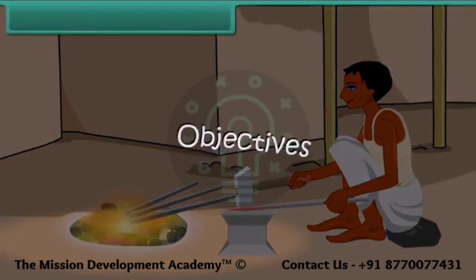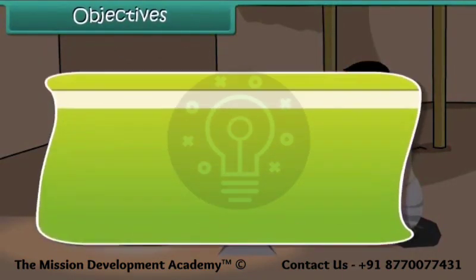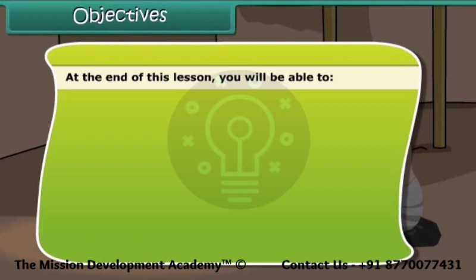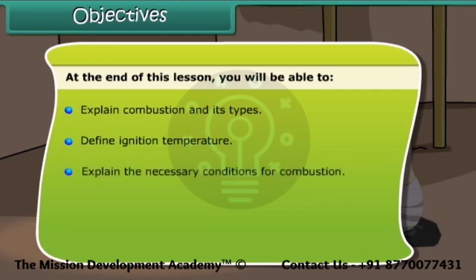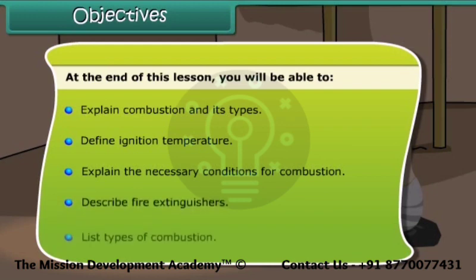Objectives: At the end of this lesson you will be able to explain combustion and its types, define ignition temperature, explain the necessary conditions for combustion, describe fire extinguishers, and list types of combustion.